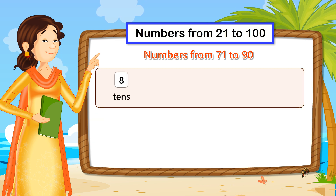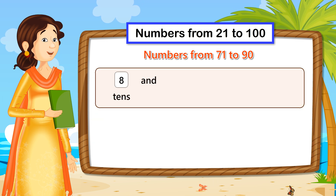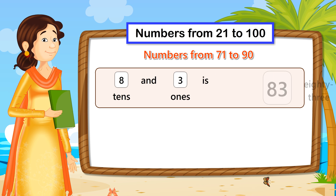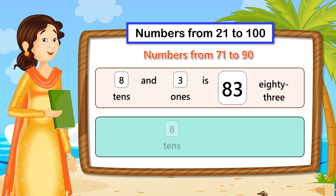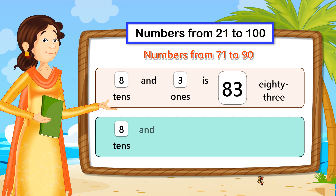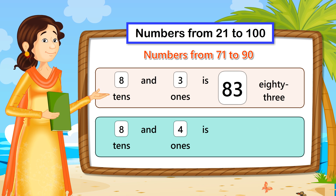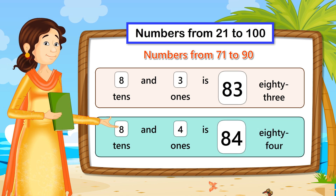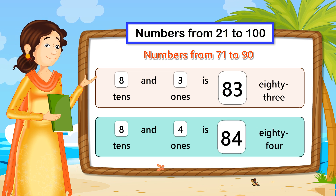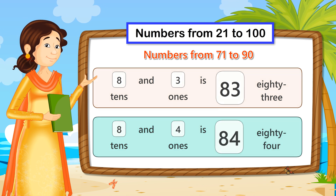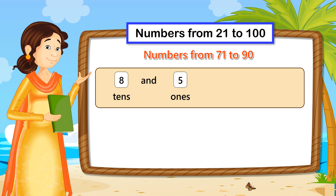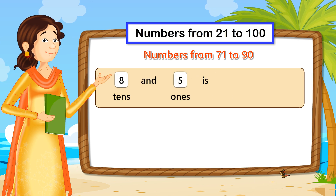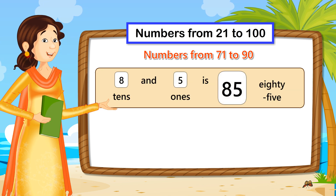8 tenths and 3 ones is 83. 8 tenths and 4 ones is 84. 8 tenths and 5 ones is 85.